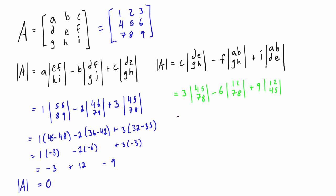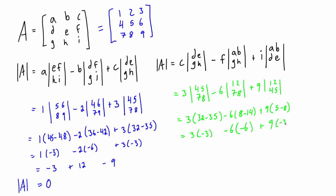Expanding: 3 times (4×8 − 5×7) = 3×(32 − 35), minus 6 times (1×8 − 7×2) = −6×(8 − 14), plus 9 times (1×5 − 2×4) = 9×(5 − 8). That gives us 3×(−3) minus 6×(−6) plus 9×(−3), which equals −9 + 36 − 27.